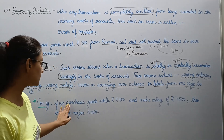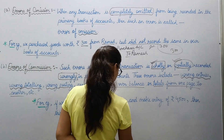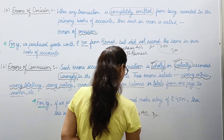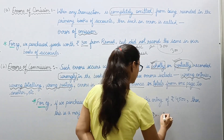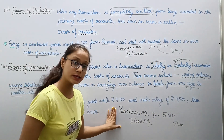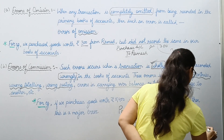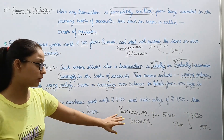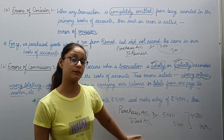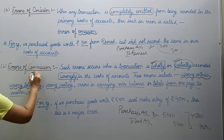For example: you purchased goods worth 5,400 rupees. The entry that should have been made is Purchases account debit, to Cash account, rupees 5,400. But when you entered the amount, instead of 5,400 you put 4,500. When you prepare the trial balance using 4,500, the trial balance will still be equal — both debit and credit are the same. But ultimately there is a difference in the rupee amount. This type of error is called error of commission.